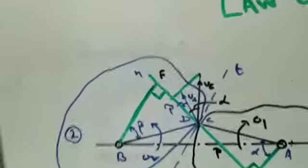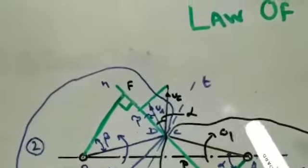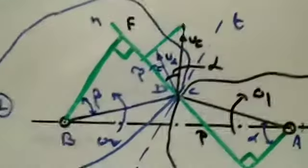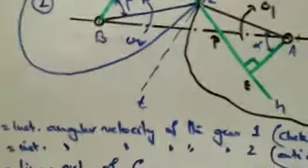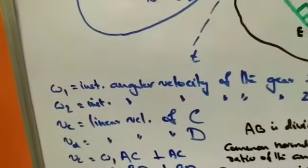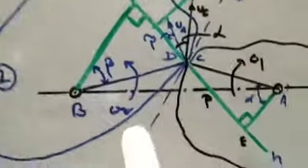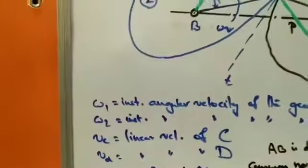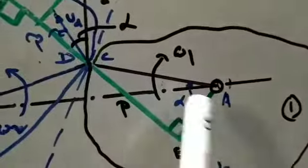Let w1 be the angular velocity of body 1, which moves in the clockwise direction, and w2 be the instantaneous angular velocity of gear 2. vc is the linear velocity at point C. Body 1 is marked in black and body 2 in blue.